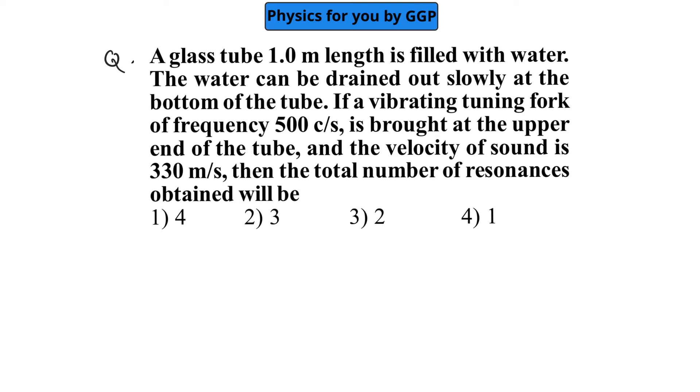A glass tube 1 meter length is filled with water. The water can be drained out slowly at the bottom of the tube. If a vibrating tuning fork of frequency 500 oscillations per second is brought at the upper end of the tube, and the velocity of sound is 330 meters per second, the total number of resonances obtained will be...